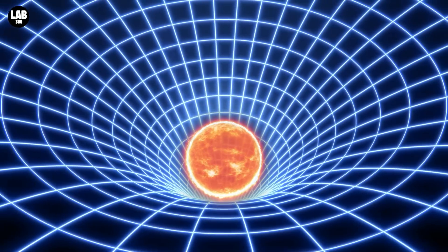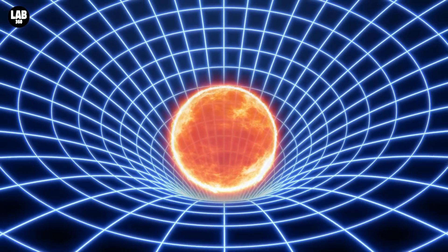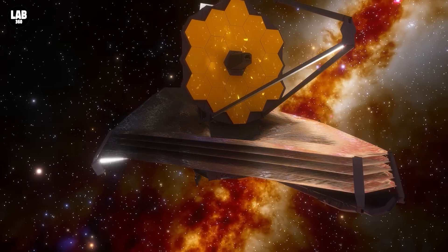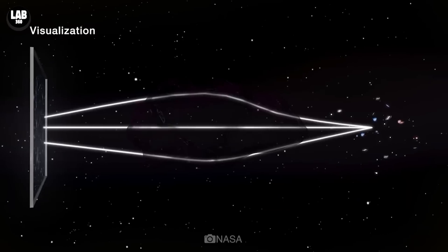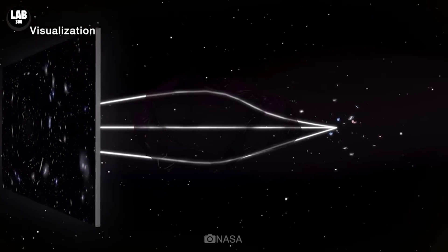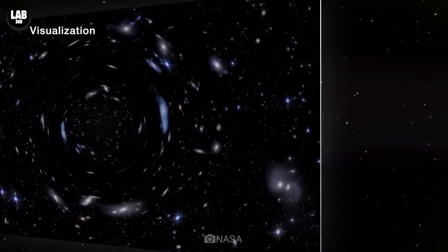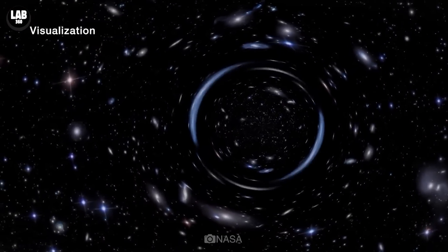Since then, we have countless proofs of general relativity. Even the new images from the James Webb Space Telescope show the bending of space-time around massive celestial objects, and while doing so, it focuses and magnifies light like a telescope in an effect called gravitational lensing.